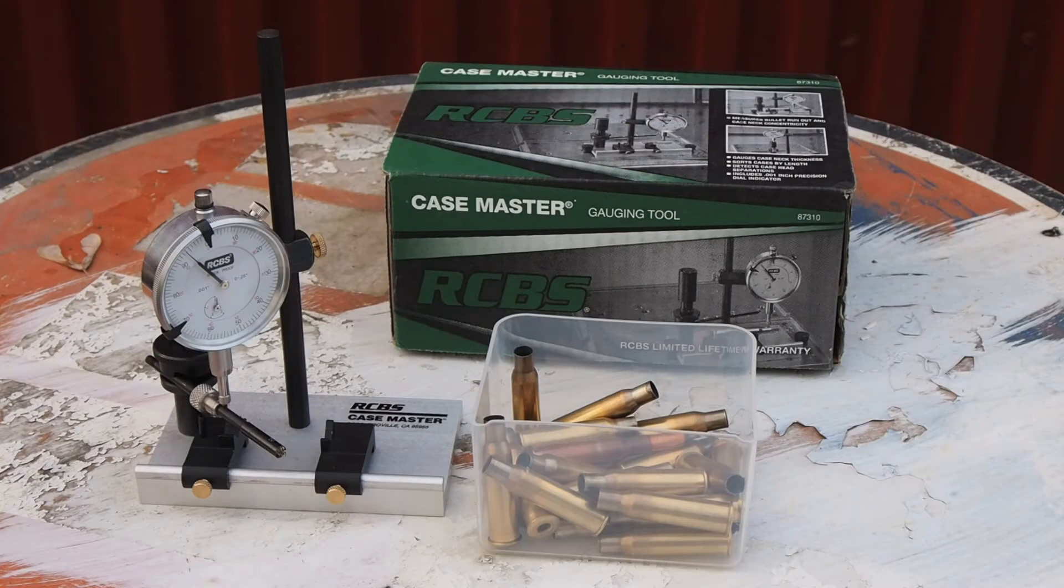This is the RCBS Case Master. It's the Swiss Army knife of concentricity gauges. It does pretty much everything you could ever want a concentricity gauge to do.